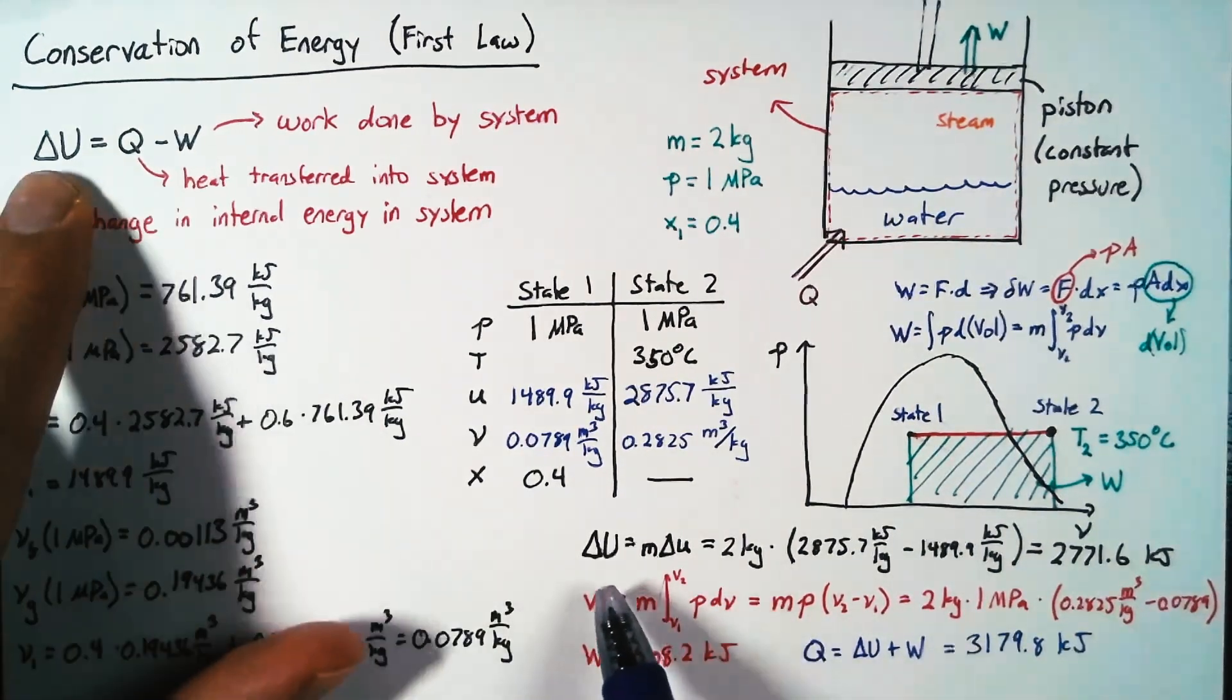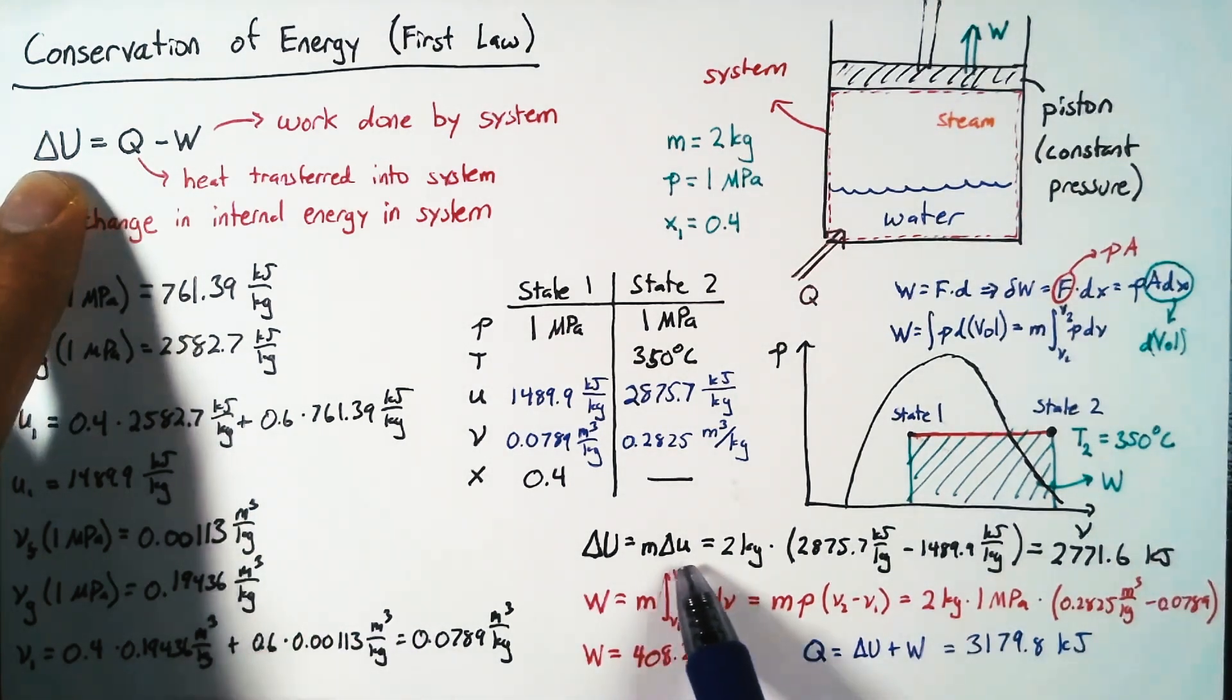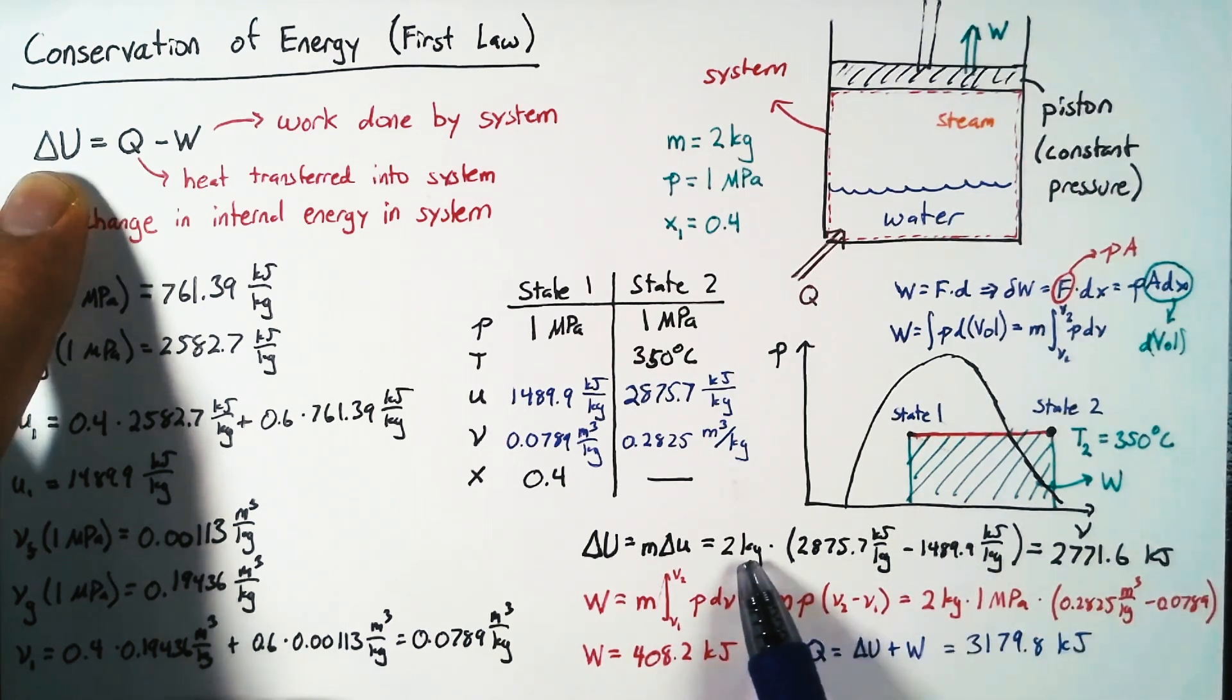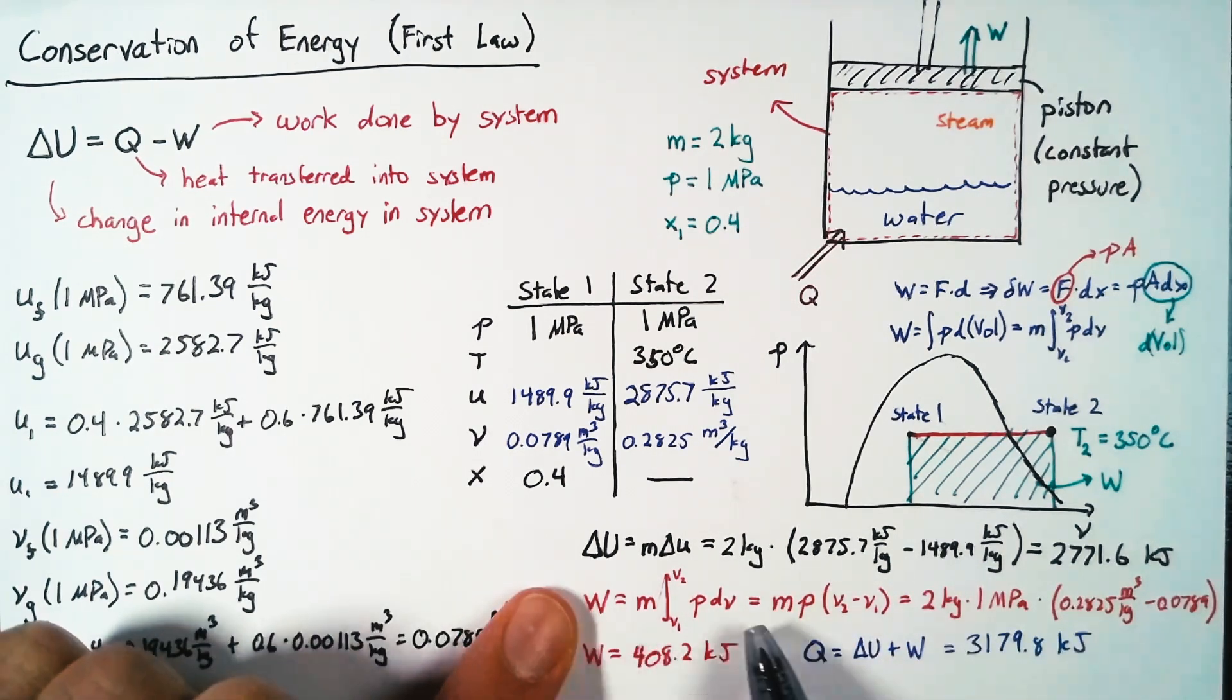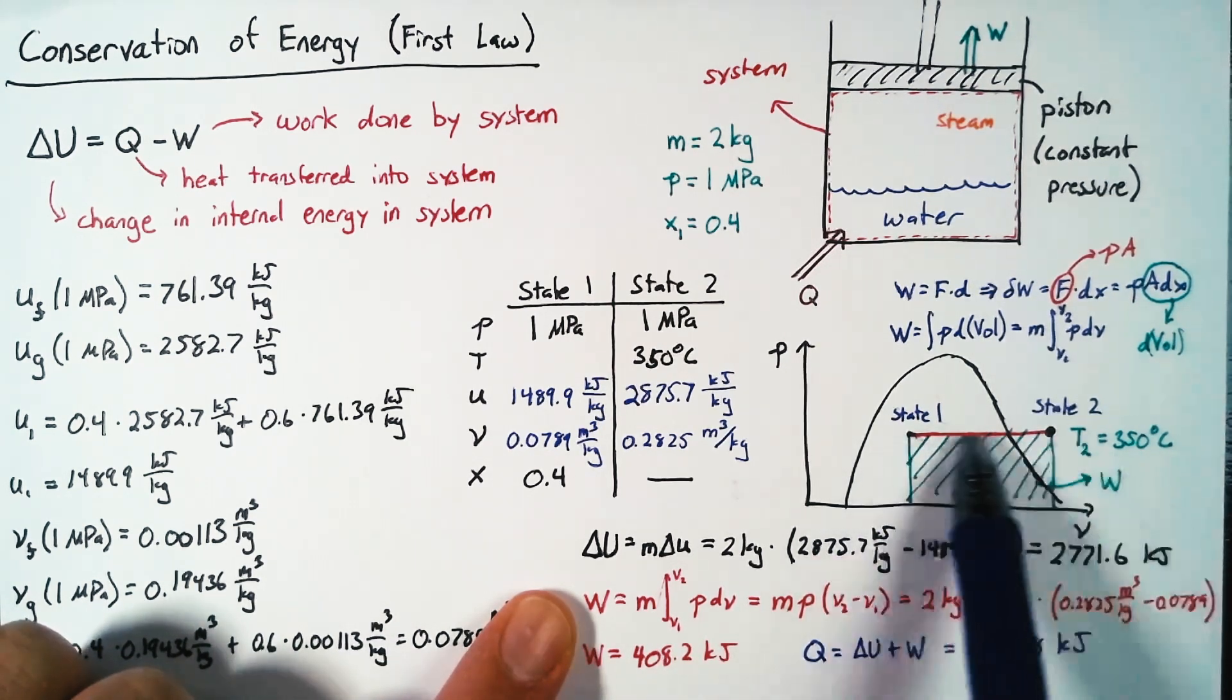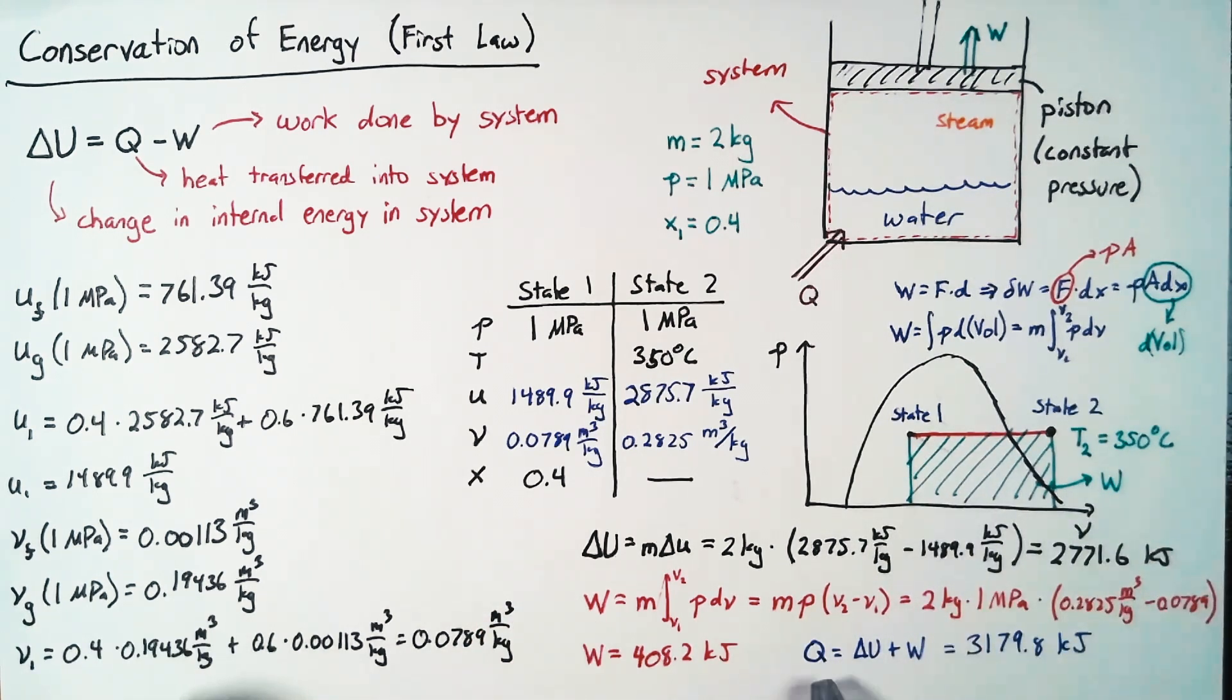So just to recap, delta U comes specifically from that specific internal energy, the difference between the two states, multiplied by the mass. Work comes from this integral of PDV, which we're able to integrate very easily for a constant pressure problem. And then finally, we can find heat transfer by adding the change in internal energy and the work done by the system.